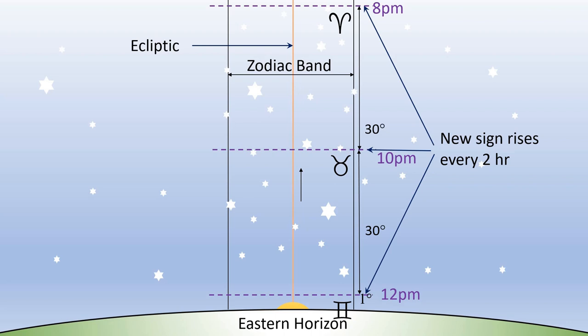I've already explained why every sign rises in two hours, but let me reiterate: since Earth takes 24 hours to rotate around its axis and also cycles through the 12 signs of the zodiac during that time, it takes two hours to complete one sign. Hence, from Earth it appears as if a new sign is rising every two hours. Of course you can't see the constellations specifically — the one through which the Sun is currently passing — and obviously none during the daytime, but I hope you get the point.